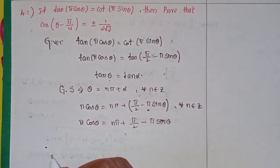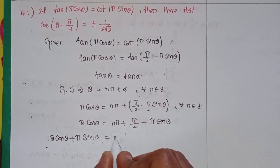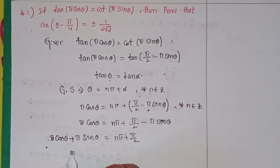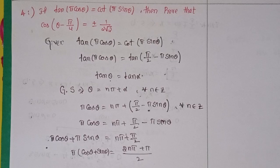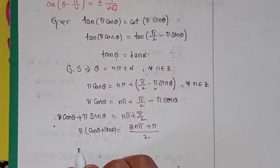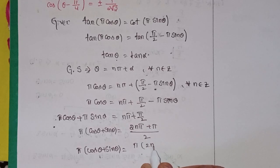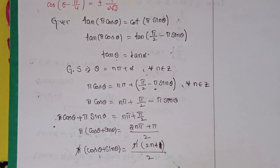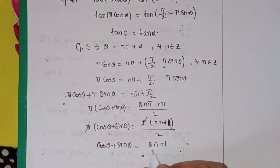Now we bring the trigonometric ratios to one side: π·cosθ + π·sinθ = nπ + π/2. Taking π common: cosθ + sinθ = (2n + 1)/2, for all n belonging to Z.